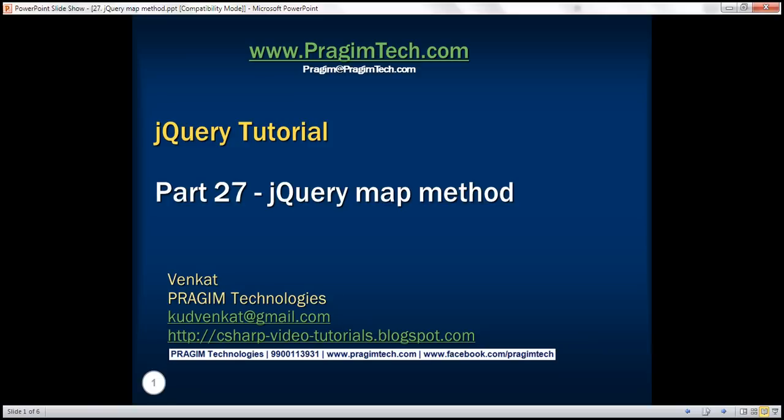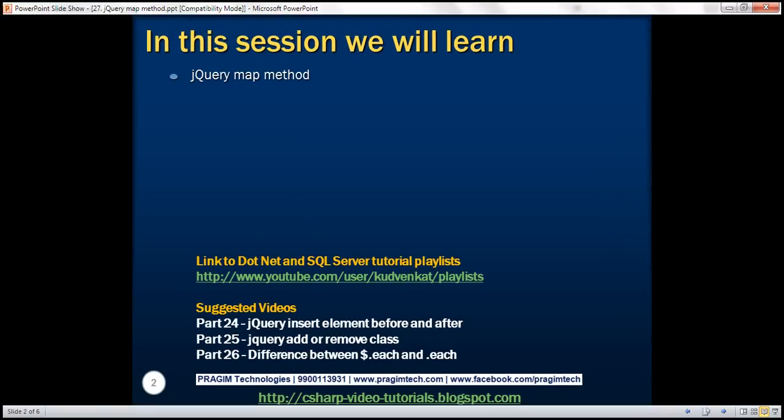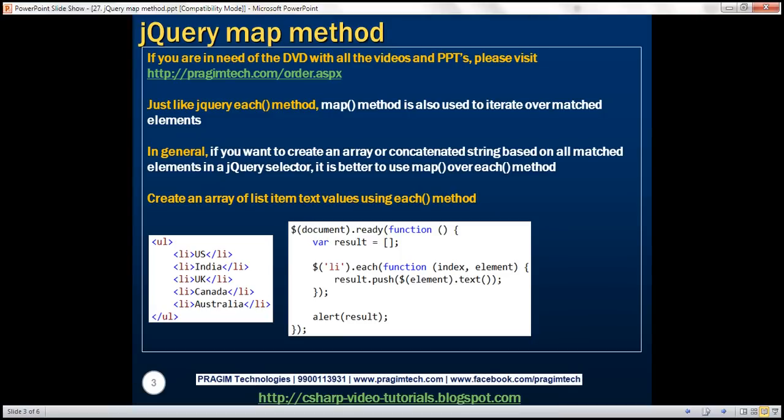This is part 27 of jQuery tutorial. In this video, we'll discuss the jQuery map method. Just like the jQuery each method, map method is also used to iterate over matched elements. In general, if you want to create an array or concatenate a string based on all matched elements in a jQuery selector, it's better to use map over each method.